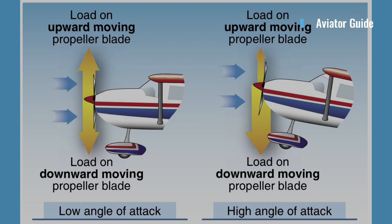Since the propeller blade is an airfoil, increased velocity means increased lift. The down-swinging blade has more lift and tends to pull or yaw the aircraft's nose to the left. When flying at a high angle of attack, the downward moving blade has a higher resultant velocity, creating more lift than the upward moving blade. This is easier to visualize if the propeller shaft is mounted perpendicular to the ground like a helicopter. If there were no air movement except that generated by the propeller itself, identical sections of each blade would have the same airspeed. With air moving horizontally across this vertically mounted propeller, the blade proceeding forward into the airflow has a higher airspeed, creating more lift or thrust and moving the center of thrust toward that blade.